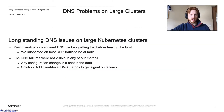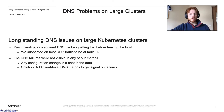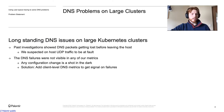For the past three years, Palantir Kubernetes clusters have been suffering from sporadic DNS failures. Past investigation showed that packets were getting lost before leaving the host. We were somewhat confident that on-host UDP was at fault. However, none of our metrics captured these low-level failures. We theorized some fixes, but we didn't have a way to make sure the fixes were actually effective. We needed to get signal on these failures.